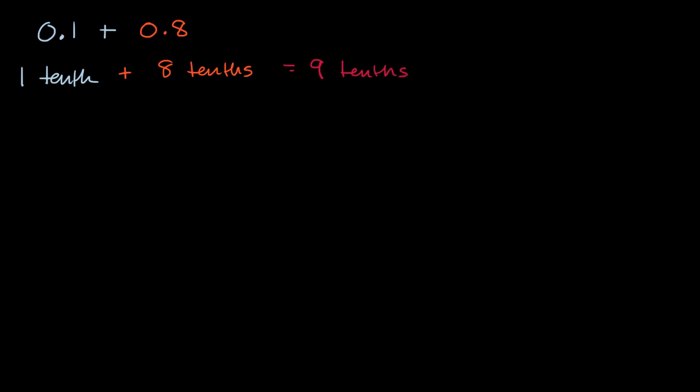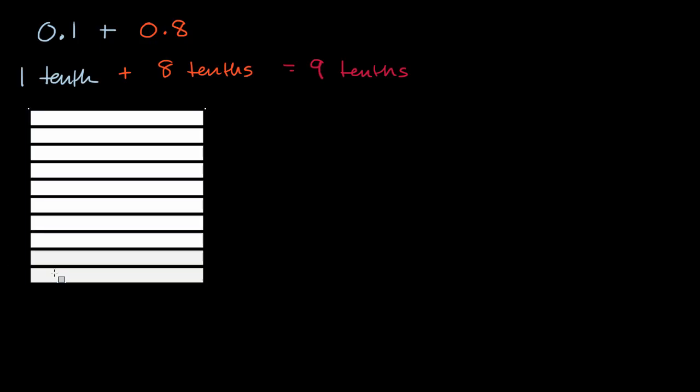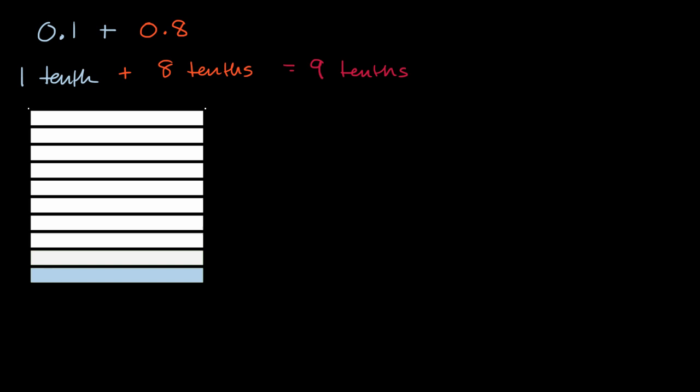Another way, we could think about it visually. So let's say we take a whole and we were to divide it into tenths, which we have right over here. So if we say this whole square is a whole, we divide it into 10 equal sections. So each of these white bars you can view as a tenth. So we have 1 tenth, so let me fill that in. So 1 tenth, whoops, that's not what I wanted to do. We have 1 tenth right over there.